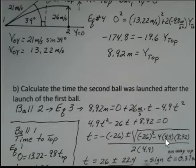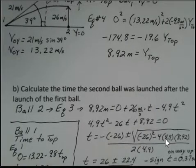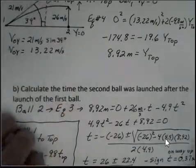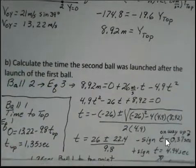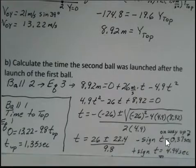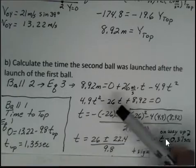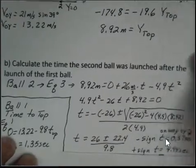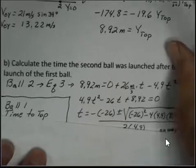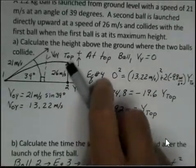So with the minus sign, 26 minus 22.4 divided by 9.8, I get 0.37 seconds. If I use the plus sign, then I'd have 26 plus 22.4, that result divided by 9.8, and I get 4.94 seconds. There are two times when this ball is 8.92 meters above the ground. Why is that? Why is the mathematics telling us that there are two times when the ball is at this position?